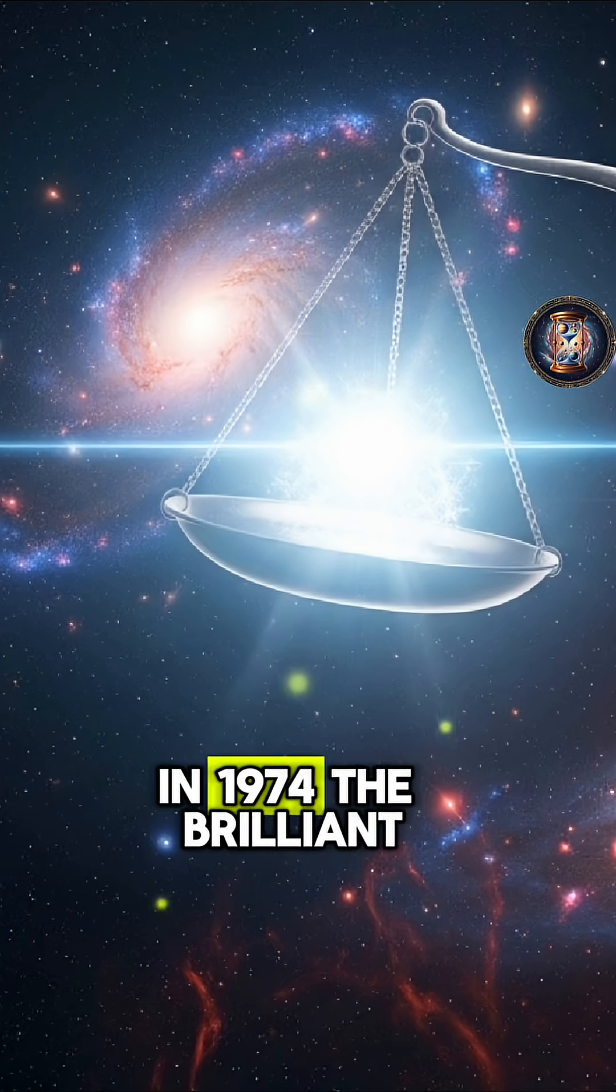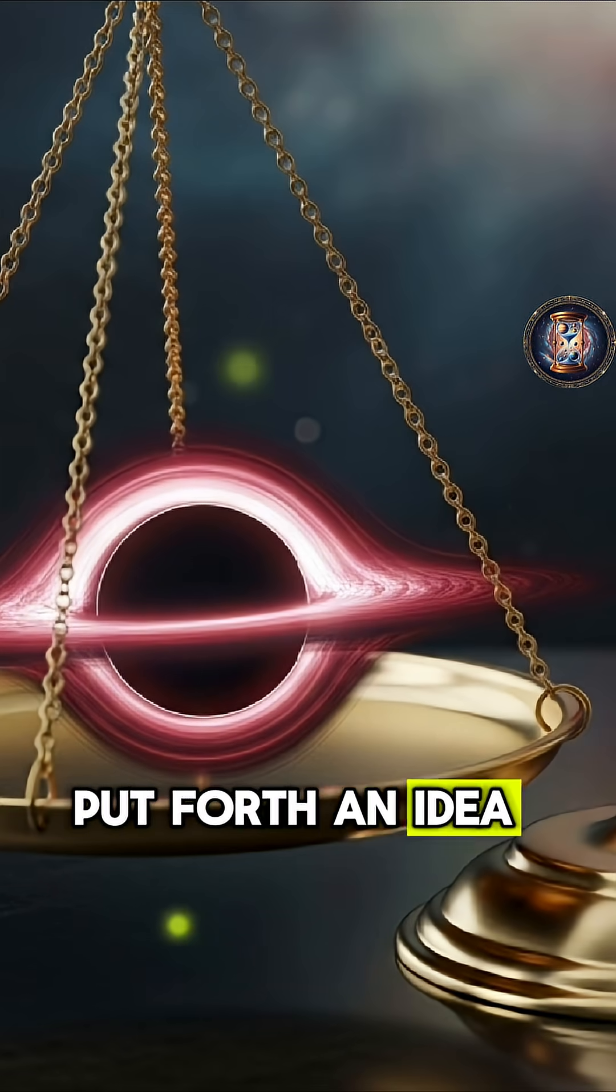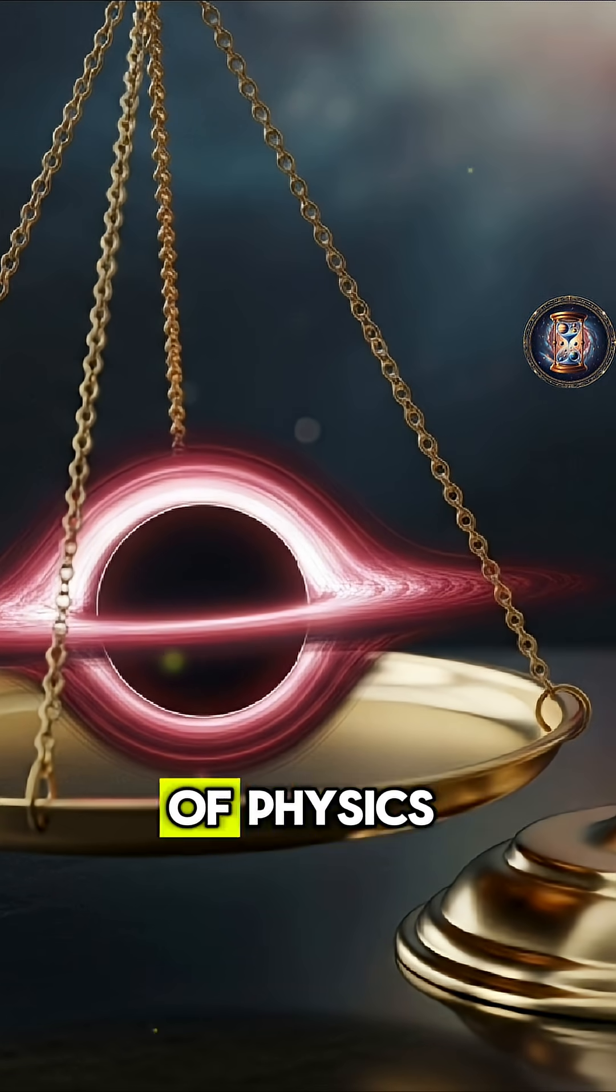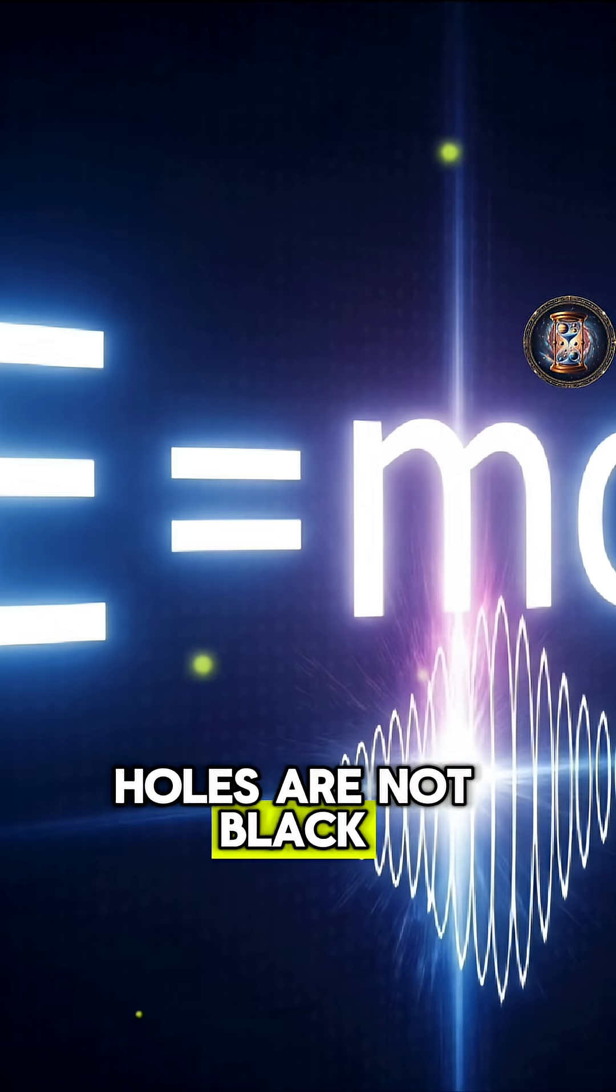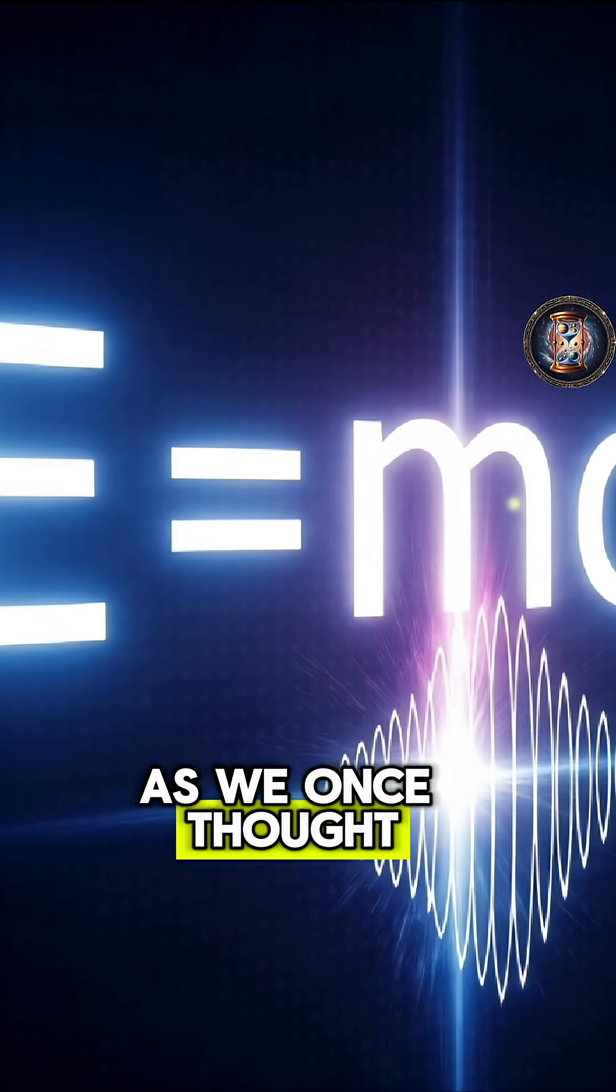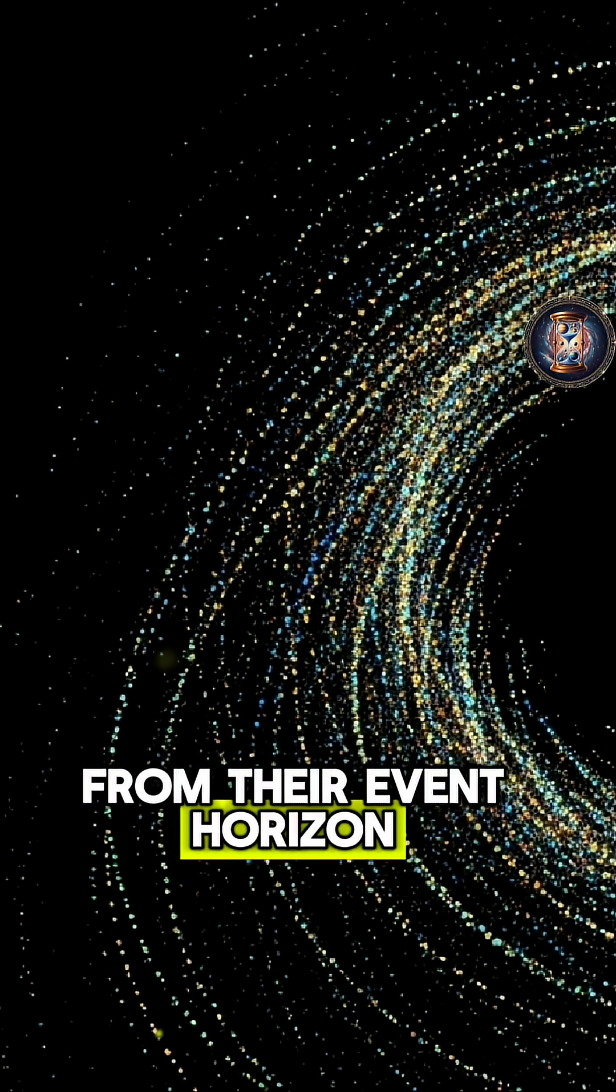In 1974, the brilliant physicist Stephen Hawking put forth an idea that shook the foundations of physics. He proposed that black holes are not black at all, as we once thought, but actually emit a faint form of radiation from their event horizon.